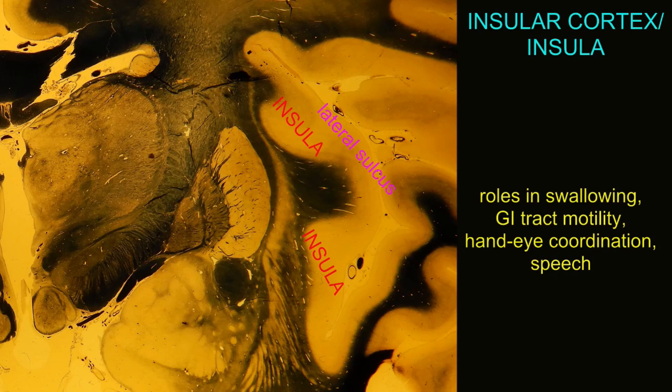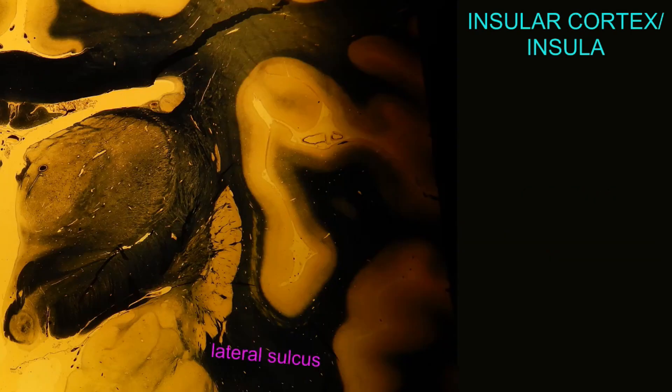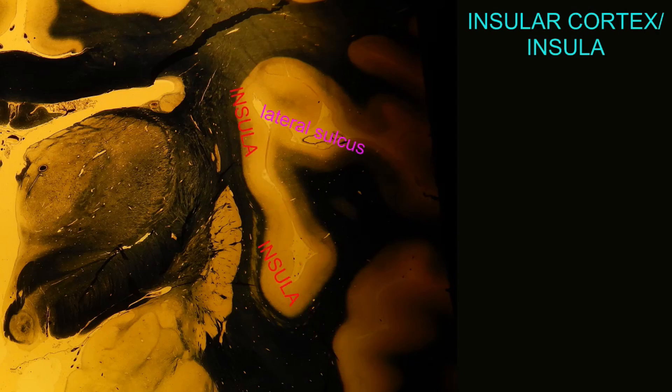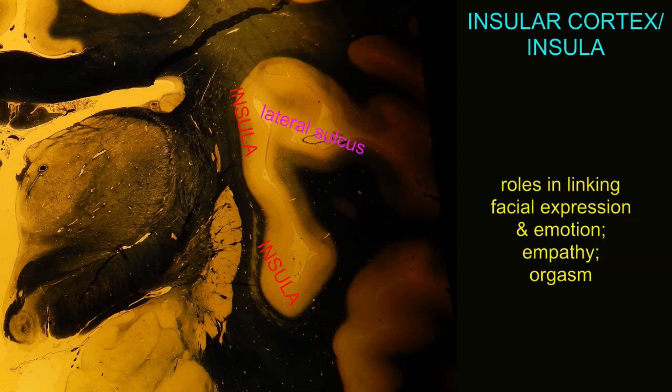The insula is involved in autonomic functions, and as part of the limbic system, has a role in emotions — particularly the expression of facial muscle movements relating to emotions, so emotional facial expression. The insula is also involved in empathy and in orgasm. So this region of the brain, which lies beneath the lateral sulcus, has a number of diverse roles.